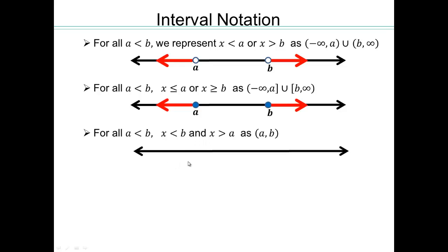When you use 'and', it means both conditions must be simultaneously true. So for x smaller than b AND x bigger than a: here's a, here's b. x bigger than a means going to the right, and x smaller than b means going to the left. Since they must be simultaneously true, the solution is the overlap — right in between. All values in between are bigger than a and smaller than b. Going left of a means you're not bigger than a; going right of b means you're not smaller than b. So the solution is the interval in between: open bracket a comma b.